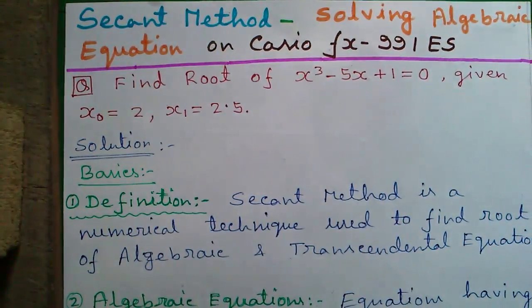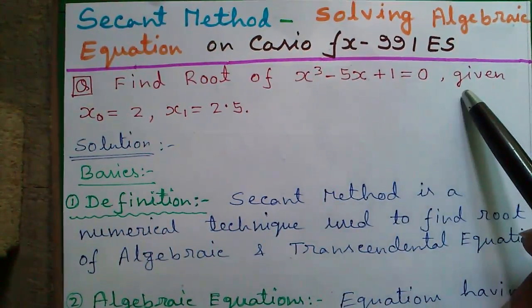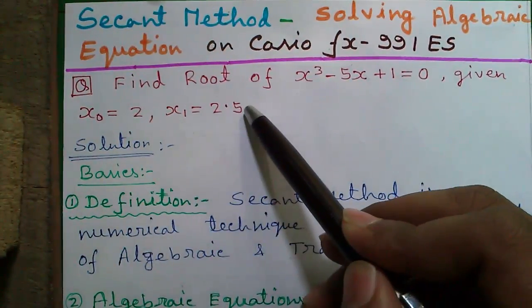Our question is find the root of x³ - 5x + 1 = 0, given x₀ = 2 and x₁ = 2.5.